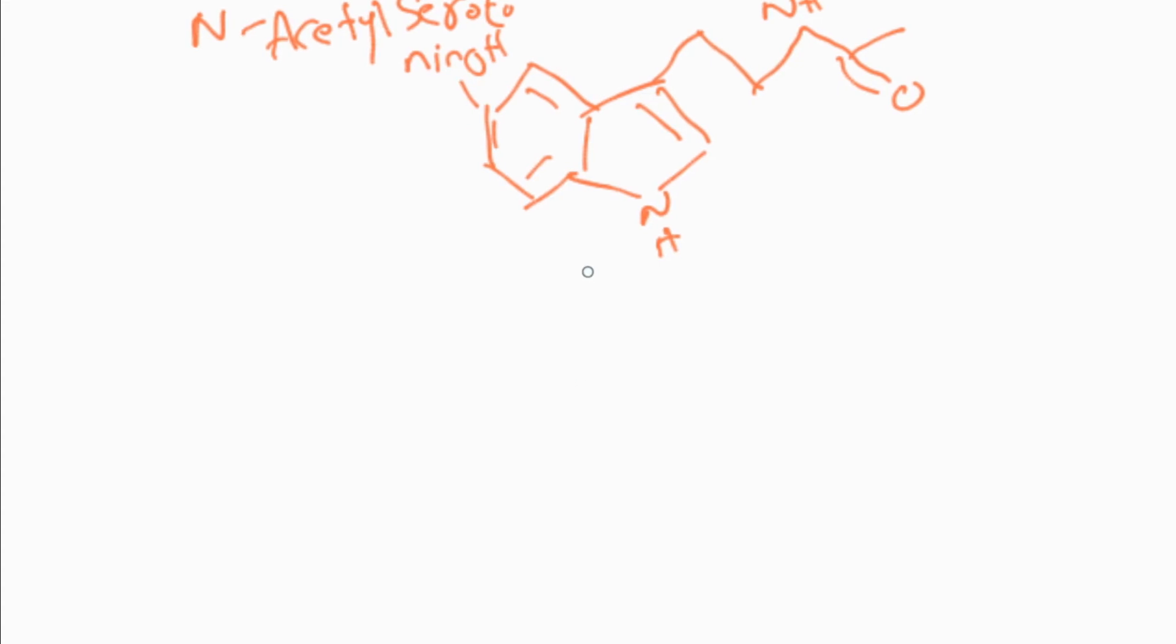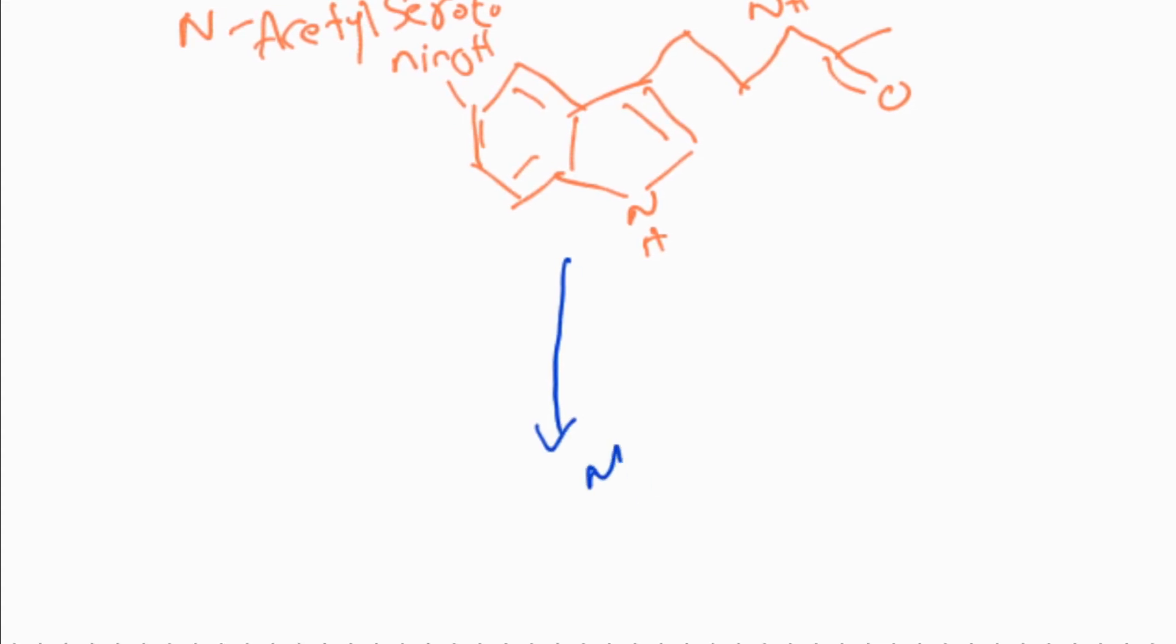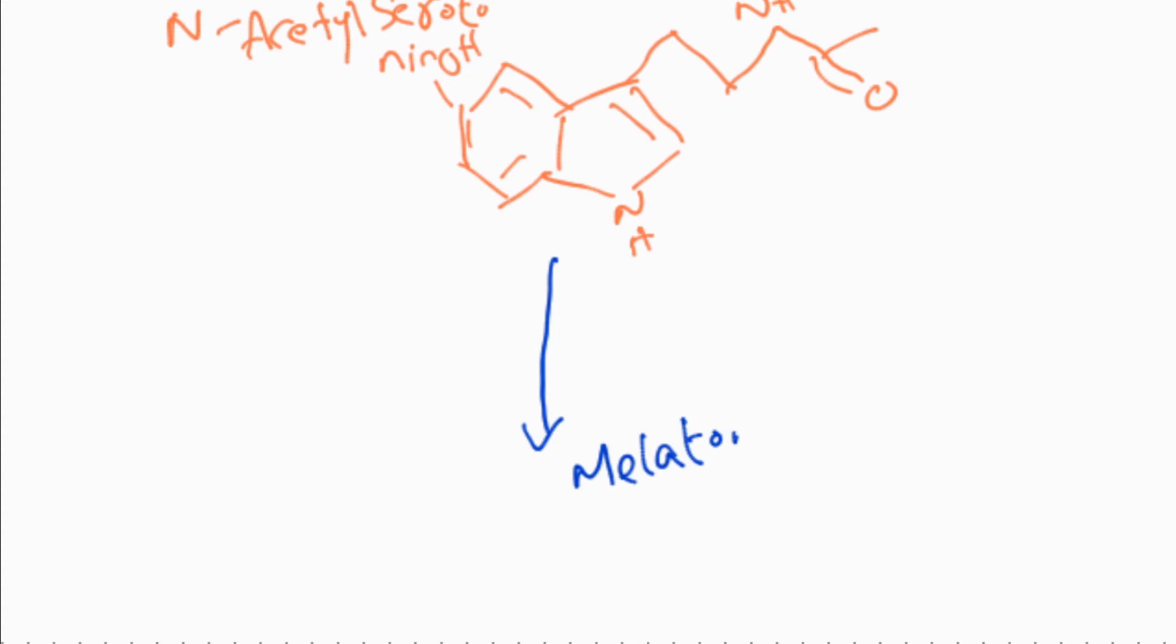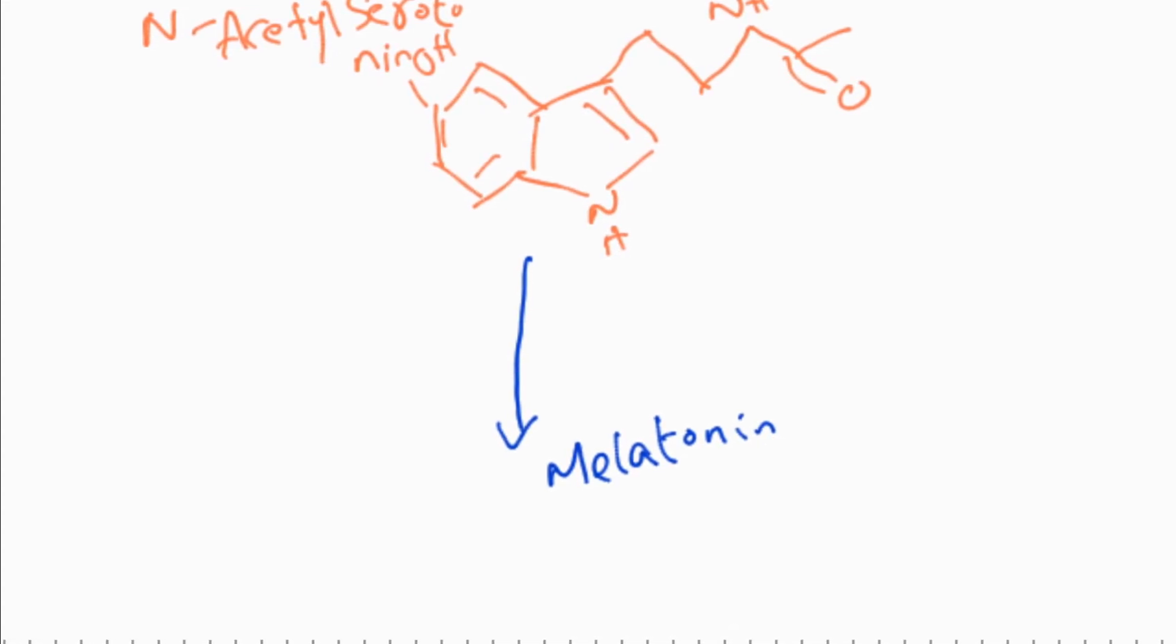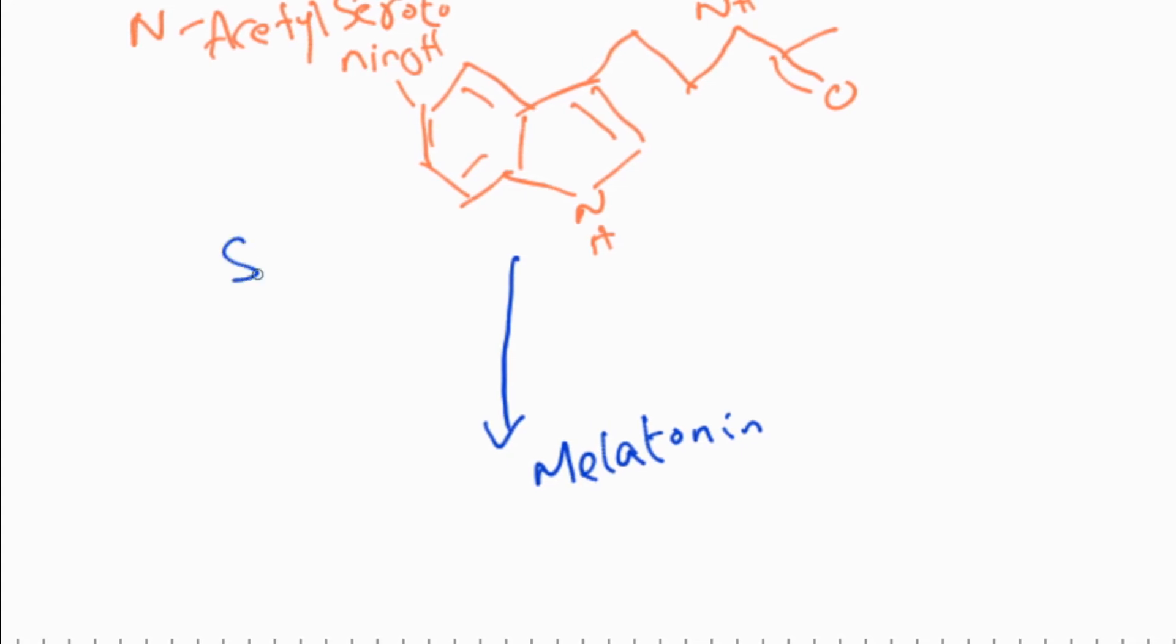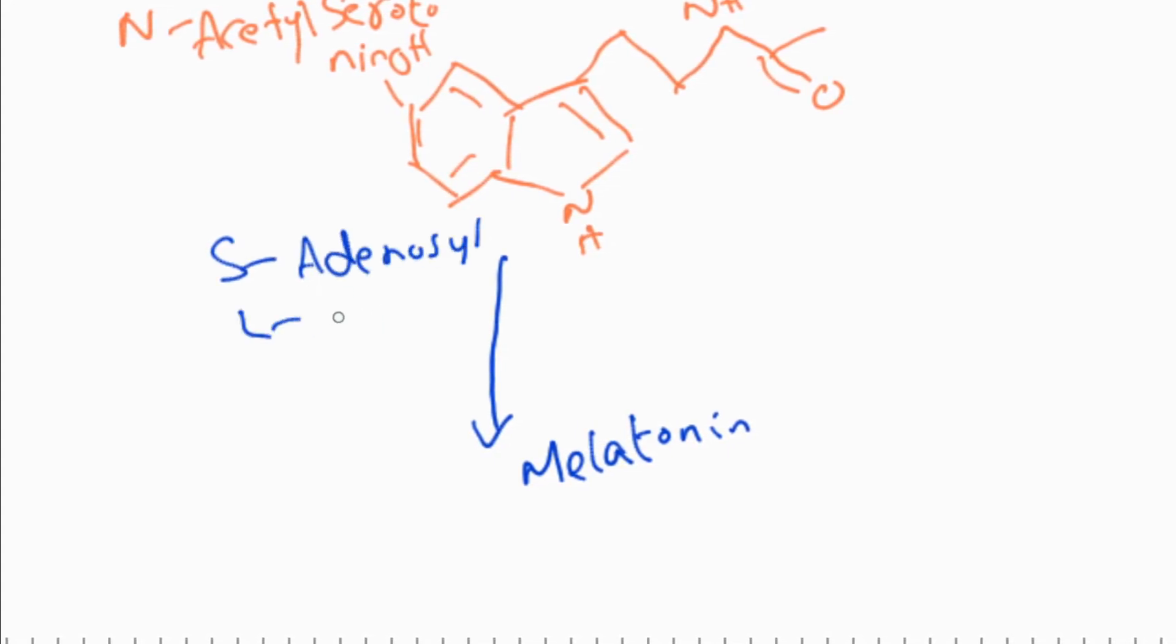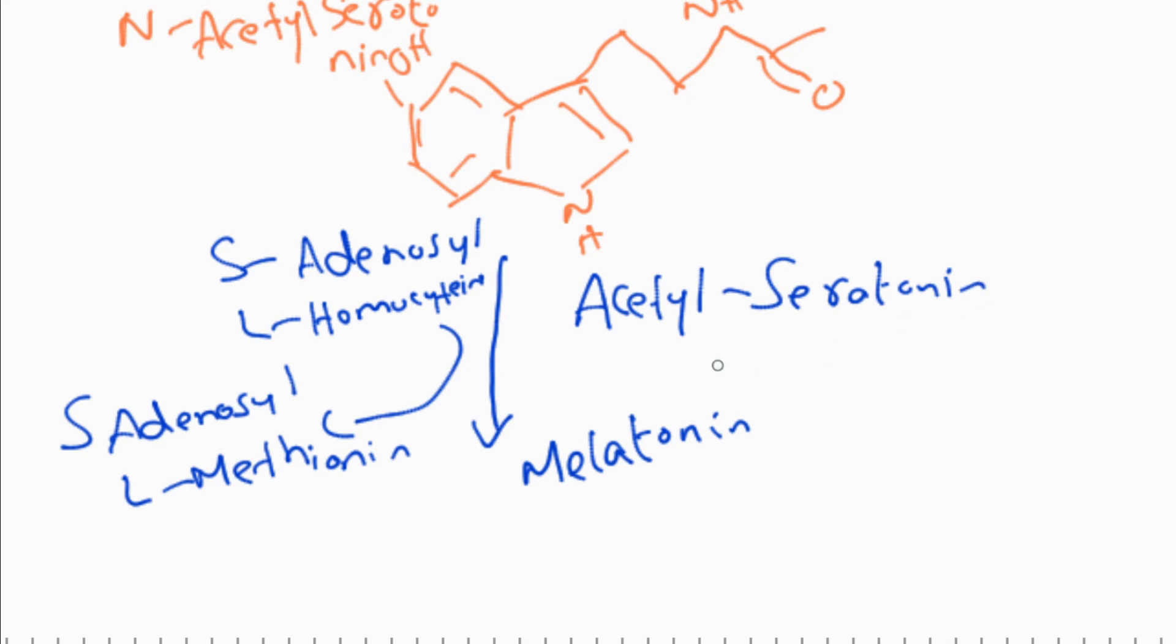N-acetylserotonin is converted into melatonin by the methylation of the hydroxy group at carbon-5 using S-adenosylmethionine with the help of enzyme acetyl-serotonin O-methyltransferase.